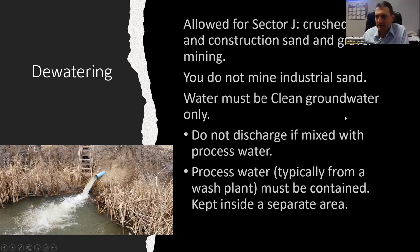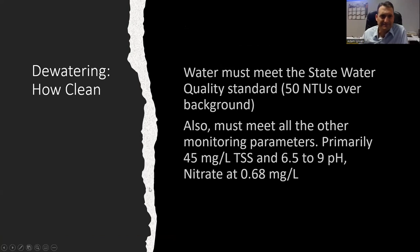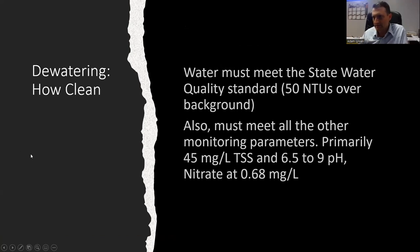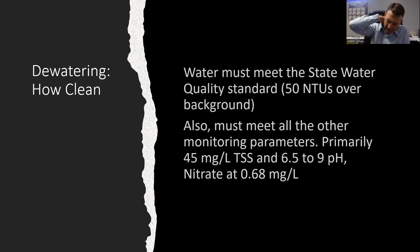We talked about dewatering already. I keep emphasizing process water — that's probably the biggest way to get a penalty, mixing process water with your stormwater. The dewatering water would have to meet the state water quality standard. In Idaho, that's 50 NTUs over background. There's also other monitoring parameters. This is an example lab test result showing nitrogen, pH, and total suspended solids, which was all that was required at that time.